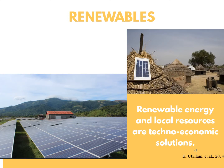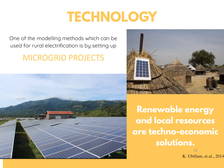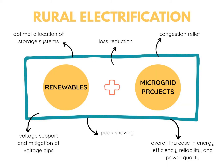Renewables have become the driving force for the rapid increase of distributed energy resources. These usually come as inherently small size and near-to-final customers, which gives technical benefits to both active distribution networks and isolated electrical systems like microgrids. Thus, one of the modeling methods which can be used for rural electrification is by setting up microgrid projects, which use renewable energy as their resource. Sample technical benefits of having microgrids relying on renewables are optimal allocation of storage systems, congestion relief, an overall improvement of energy efficiency, reliability, and power quality, and many more.